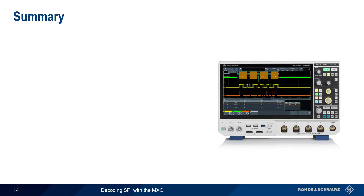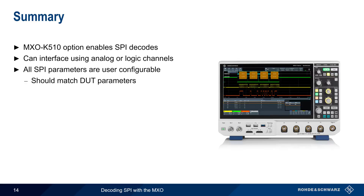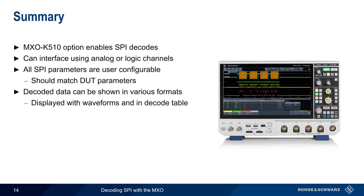Let's end with a brief summary. The K510 Serial Decode option enables SPI decodes on MXO Series Oscilloscopes. Connections to the DUT wires can be made either using the scope's analog channels or using logic channels. All SPI protocol parameters are user configurable and should match the DUT parameters. Decoded serial data can be displayed in a variety of formats such as hex, binary, ASCII, etc., and this data is displayed both with the waveforms and in a decode table.